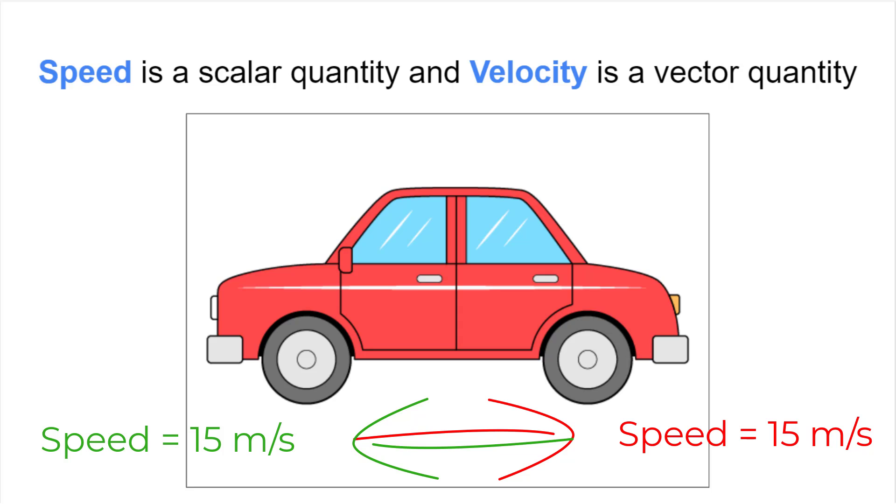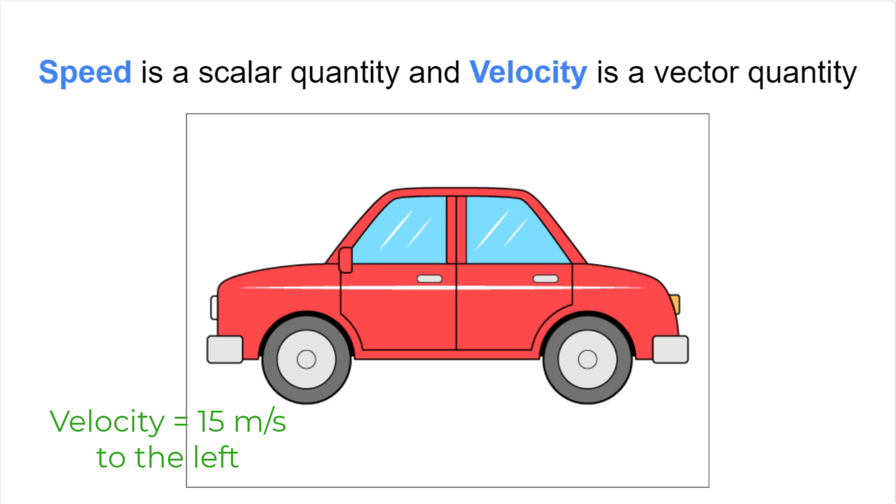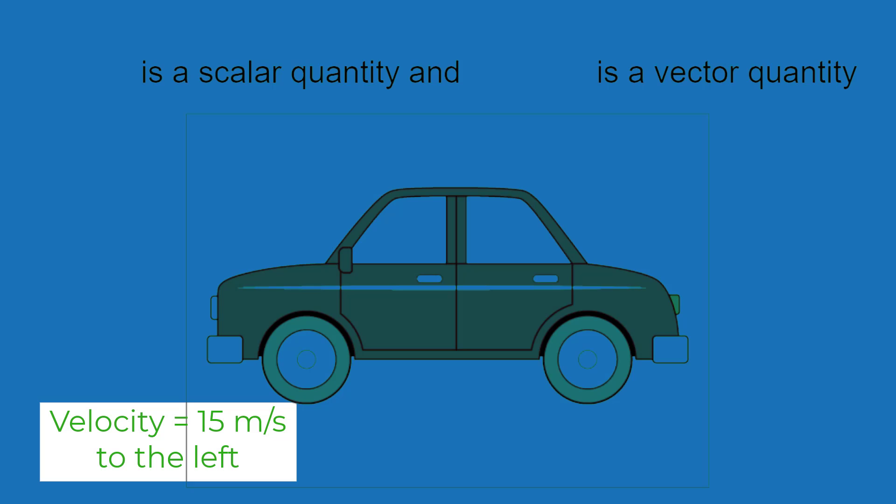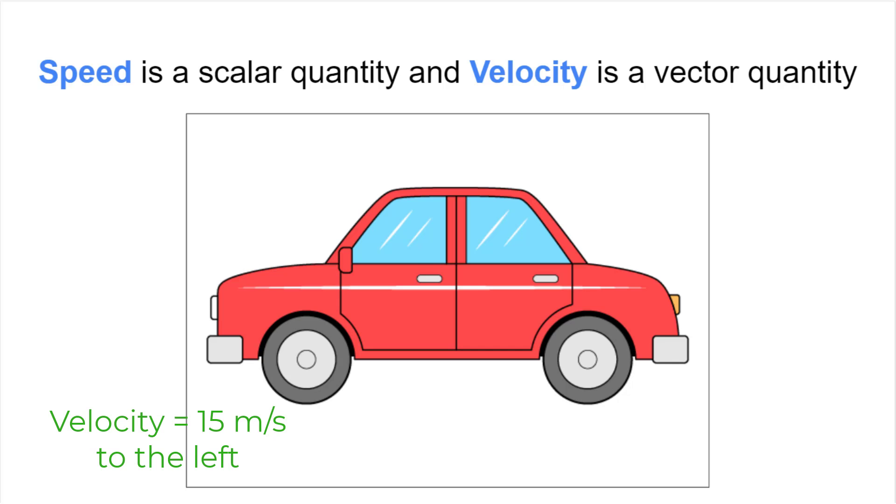However, you cannot use the word velocity to describe those same cars. Since velocity is a vector quantity, we must report the direction the car is traveling in order to say it has a velocity. For example, the car traveling to the left has a velocity of 15 meters per second to the left. The speed is 15 meters per second. But when we add the direction of travel for the car instead of speed, we are now describing the velocity of the car.